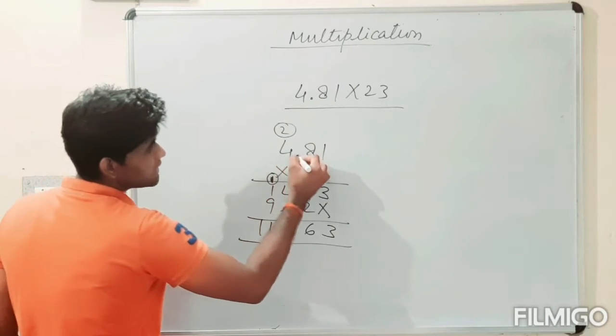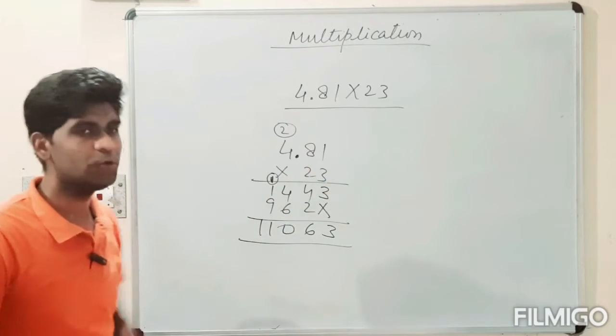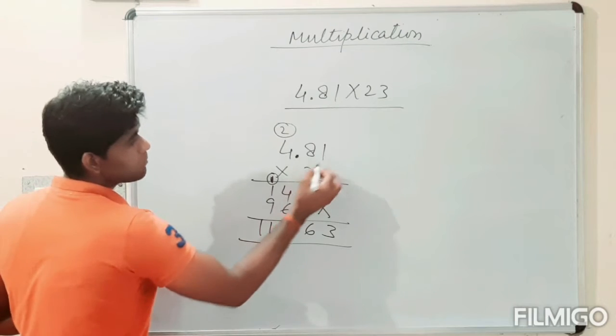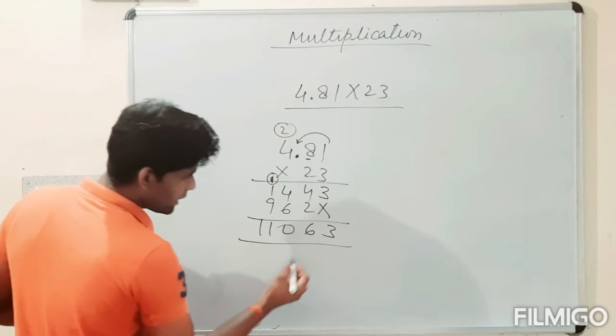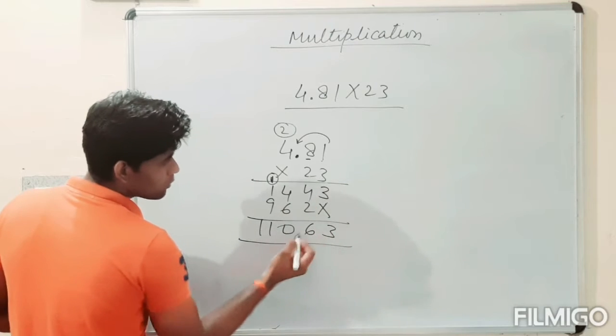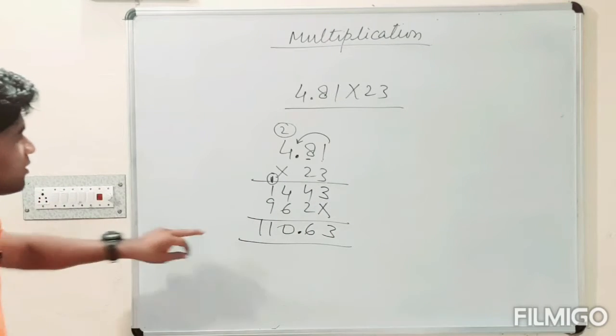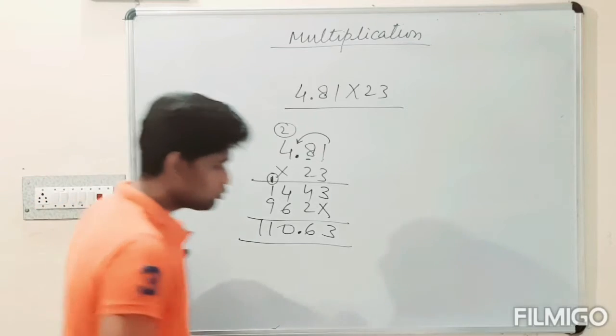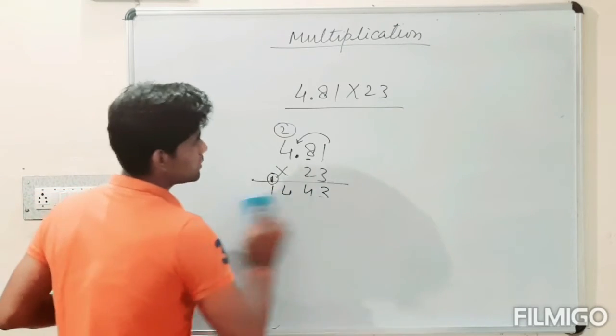Then look, where is the place value of this decimal? This decimal's place value is after the two numbers. 8, 1 and 8. After the two numbers, it is the place value. So, we need to count two numbers from the right. Then our answer is 110.63. So, this is the manner how will you get the multiplication of the two decimal numbers.